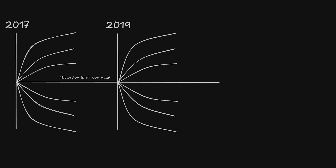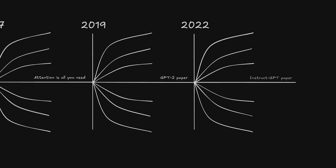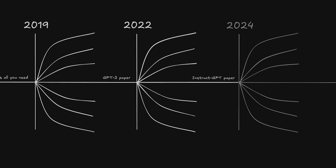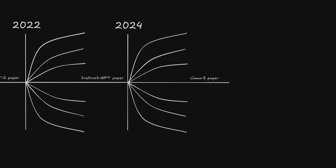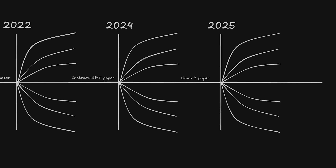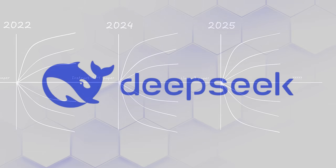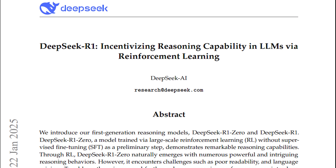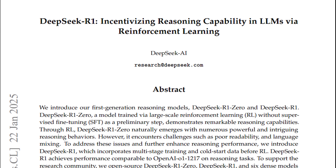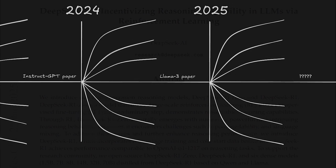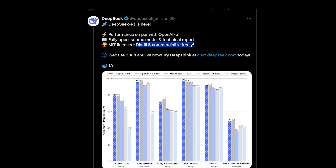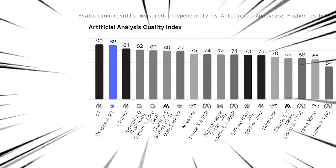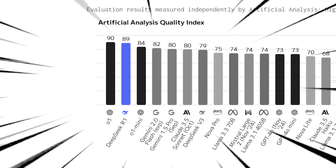Occasionally, some people around the world publish groundbreaking research papers — the kind that dictate the entire direction the AI field will head towards. With this Chinese AI company called DeepSeek, not only did they release a pivotal research paper that will probably change the course of AI development, but they also published their models free for everyone to download and use commercially, with the models now being arguably the best in the world.